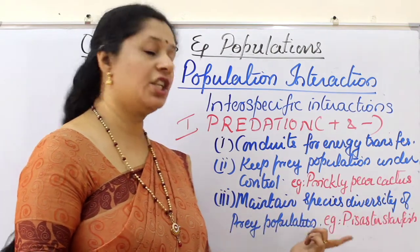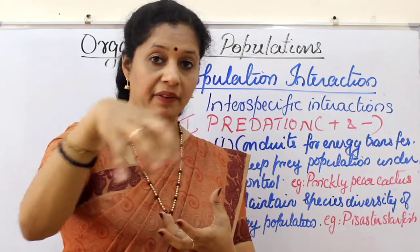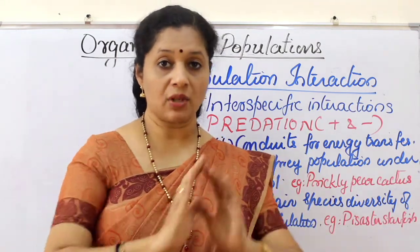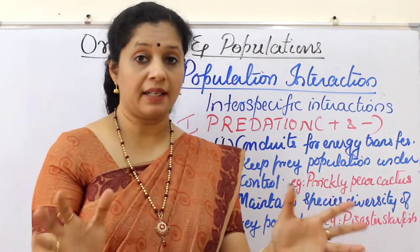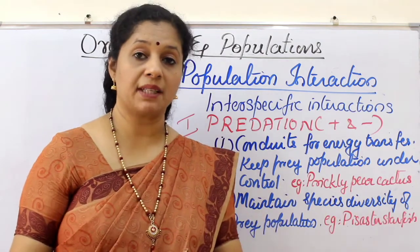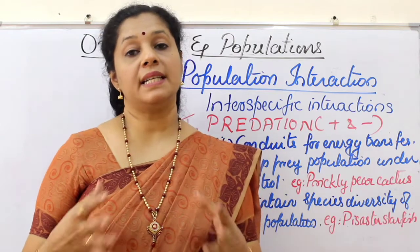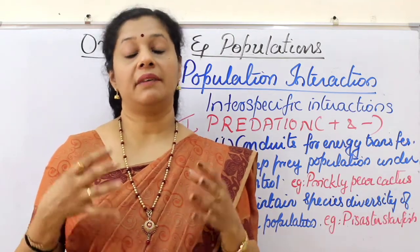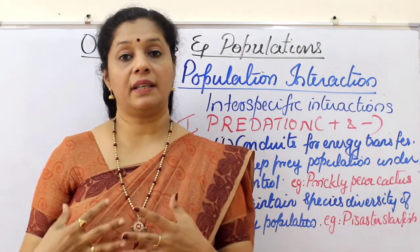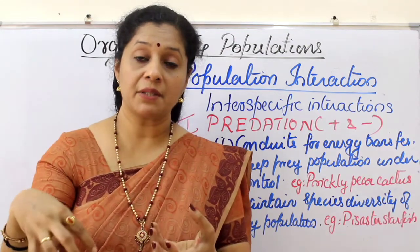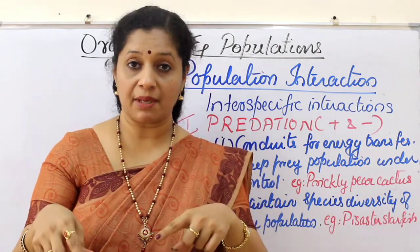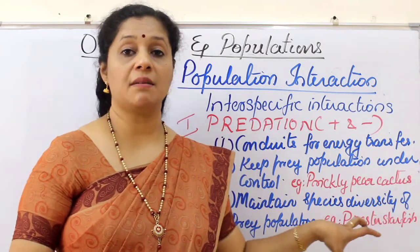Third, predators maintain species diversity of the prey population. One predator may feed on different species below it in the trophic level, and if it is absent, those prey populations increase, compete among themselves, and die. This was proven by a field experiment on the rocky intertidal communities of the American Pacific coast, where all Pisaster starfish were removed. Within one year, in the absence of this predator, 10 other invertebrate species became extinct due to competition among themselves.